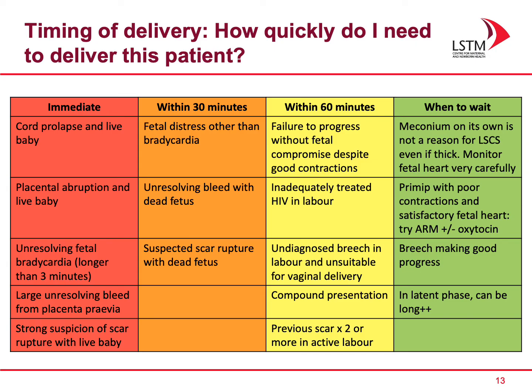You can wait when you have meconium on its own, even if it is thick — but in this instance you need to monitor the fetal heart very carefully. You can wait when you have a primigravida with poor contractions and a satisfactory fetal heart rate, when you can try artificial rupture of the membranes with or without oxytocin. You can wait when you have a breech making good progress, and when a woman is in the latent phase of labour, which can be quite long at times.